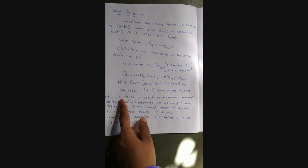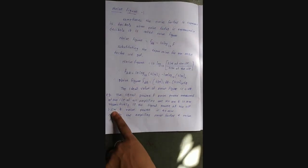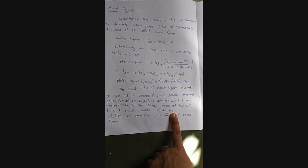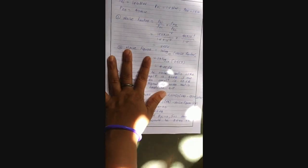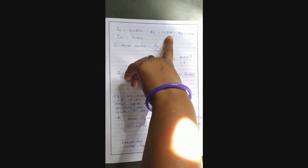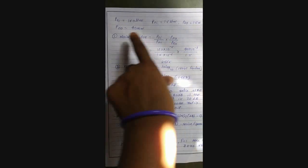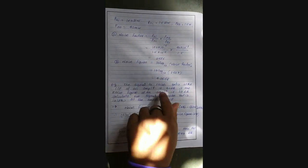The problem statement: Signal power and noise power measured at the input of an amplifier are 150 microwatts and 1.5 microwatts respectively. The signal power at the output is 1.5 watts and noise power is 14 milliwatts. Calculate the amplifier noise factor and noise figure. From the given data: signal input power P_si = 150 µW, noise input power P_ni = 1.5 µW, signal output power P_so = 1.5 W, noise output power P_no = 40 µW (as restated).